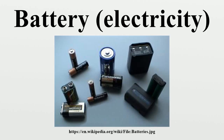Some types of primary batteries used, for example, for telegraph circuits, were restored to operation by replacing the electrodes. Secondary batteries are not indefinitely rechargeable due to dissipation of the active materials, loss of electrolyte, and internal corrosion.